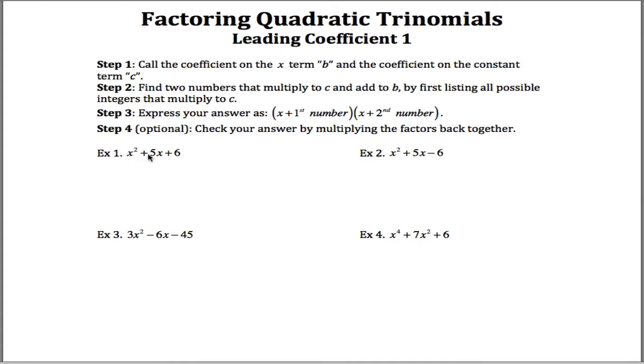And when I say looks like this, I mean there's three terms, hence the word trinomial, and the largest degree, the largest exponent is a 2, hence quadratic, and the leading coefficient is a 1. It just is 1x squared here. It doesn't say 2x squared or 3x squared or negative 5x squared, it's just 1x squared.